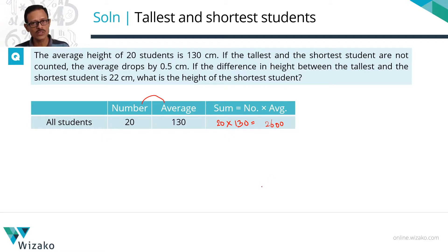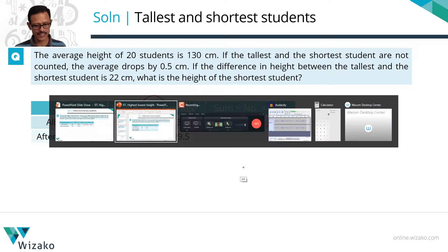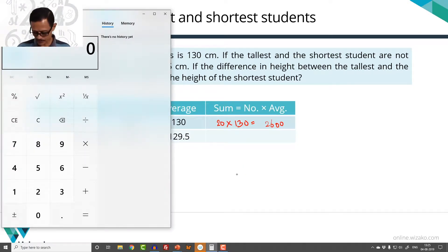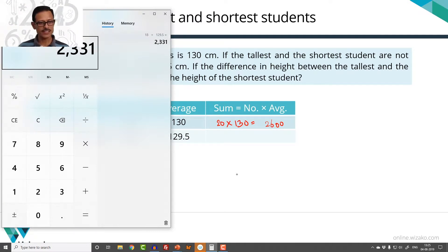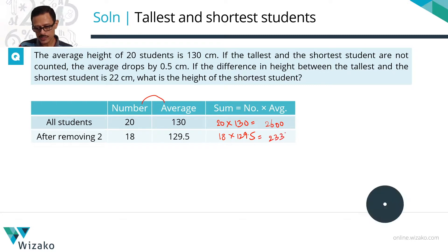Now the heights of two students have been removed, so we will be left with 18 students. The average drops by 0.5 — the initial average is 130, so the new average is 129.5. Let us quickly run through the calculator here. We have 18 students and their average height is 129.5, and the result is 2331.